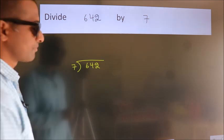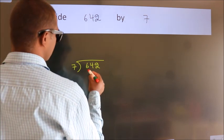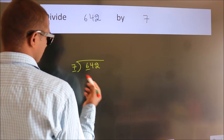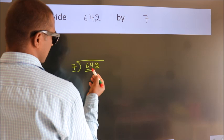Next. Here we have 6. Here 7. 6 is smaller than 7, so we should take 2 numbers: 64.